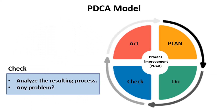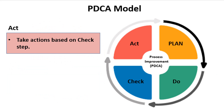After the plan is implemented, the Check step of the model analyzes the resulting process. In this step, the team checks if the expected improvements actually occurred and if any new problems were created.